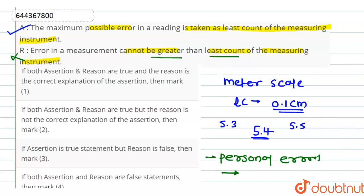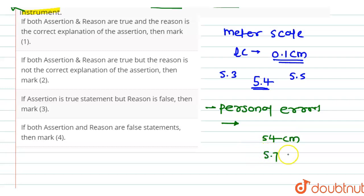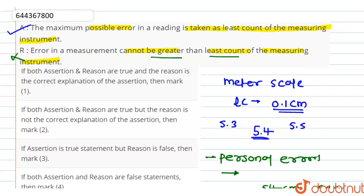Let us consider an example. If a reading taken by a person using a meter scale is 54 centimeters, but by mistake the person has taken the reading as 57 centimeters, then the error is far greater than the least count. So personal errors can be greater than the least count. Therefore, the reason statement is wrong.